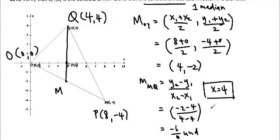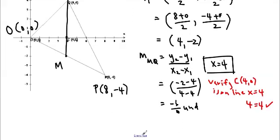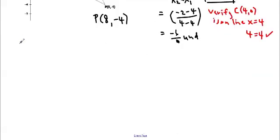So verify, I want to verify that C is on that line. Verify C(4,0) is on line X equals 4. So we plug it in, this 4 into 4. So 4 equals 4, and that is true. So yes, it is on that line. And we'd have to do all three, and then that would prove that it was the centroid, right? Because it has to be on every single median.